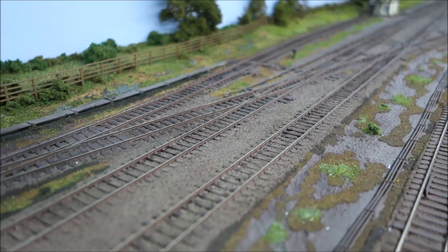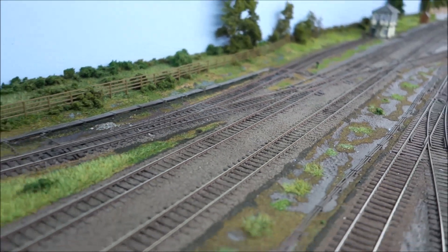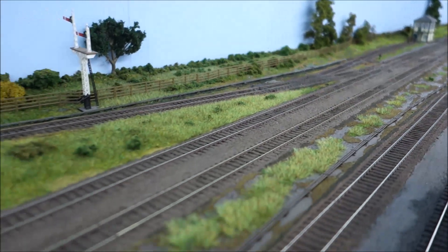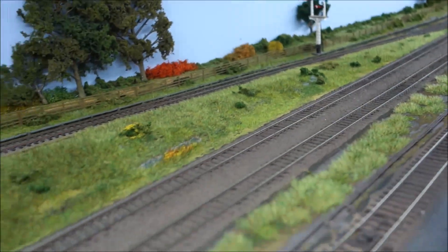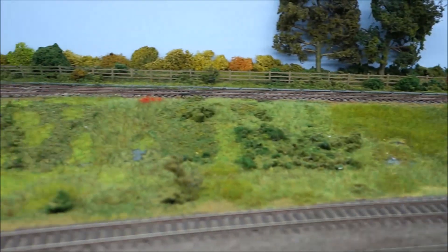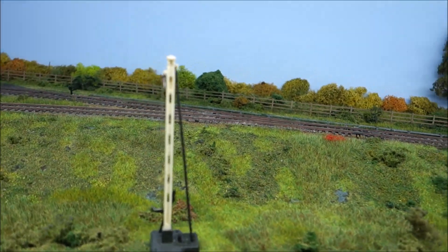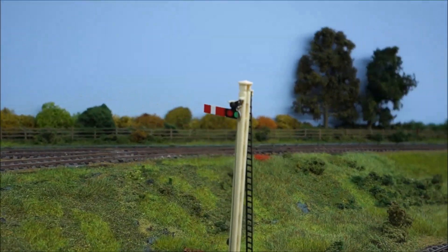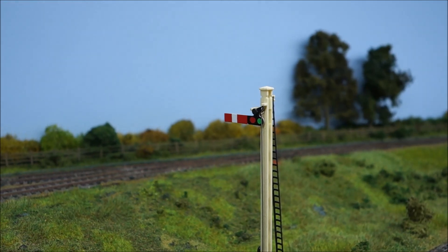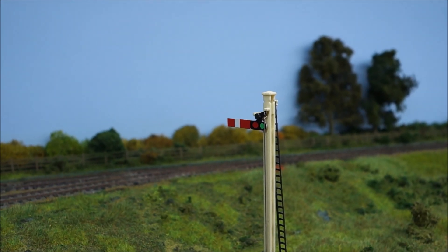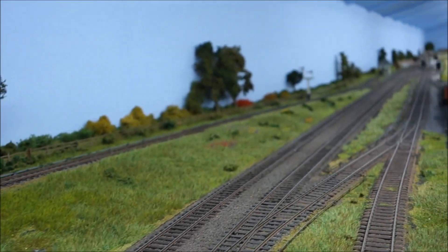The other advantage we have, is something which actually many people see as a problem, that is compression of the layout. We don't need 15 feet between a junction for argument's sake, or a crossover, and the home signal. We can compress that down. I've compressed it down to about 5 or 6 feet, but it still looks okay.